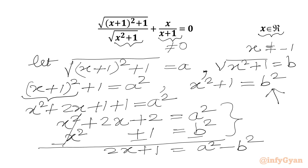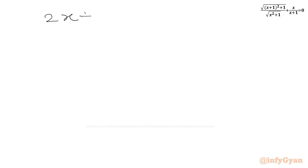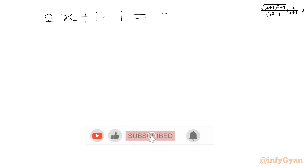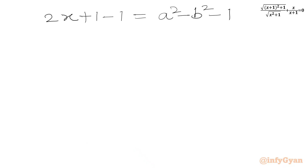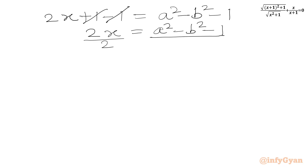We subtract 1 from both sides: 2x = a² − b² − 1. Then we divide both sides by 2 to get x = (a² − b² − 1) / 2.